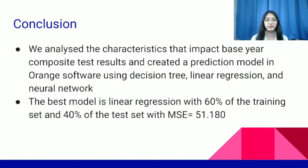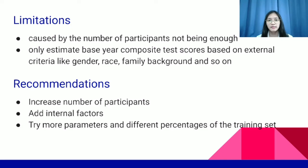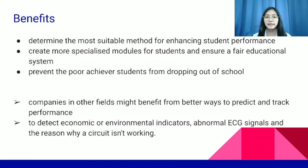In this study, we analyzed the characteristics that impact baseline composite test results and created prediction models in Orange software using decision tree, linear regression, and neural network. Our best model is linear regression with 60% training set and 40% test set, with a mean square error of 51.180. These models may not produce excellent predictions since the mean square error is far from zero, which may be caused by an insufficient number of participants, and because we only estimated the baseline composite test score based on external criteria such as gender, race, and family background. In future research, more participants and internal factors may be added, or more parameters and different training set percentages could be tried.